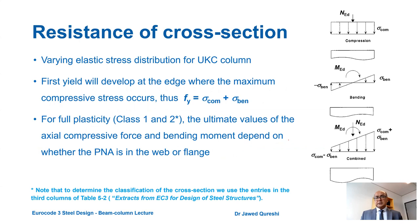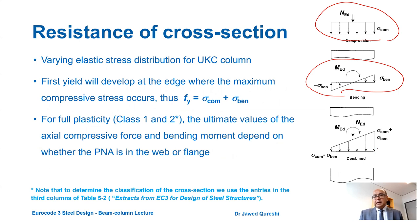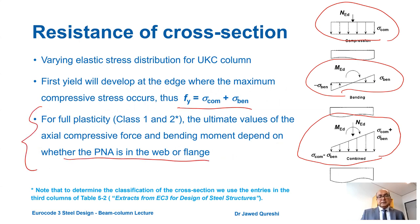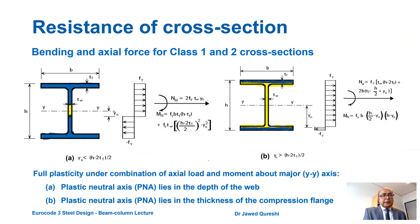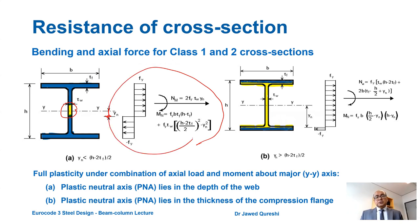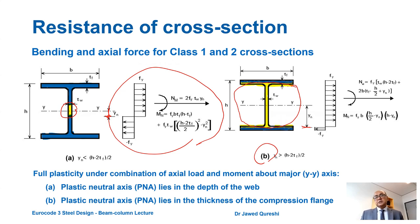How do we work out resistance of the section? When a section is subjected to compressive stresses and bending simultaneously, it will have a combination of compressive and bending stresses. The resistance depends on whether the plastic neutral axis is in the web or in the flange. In Part A, where the plastic neutral axis is in the web, only the yellow portion is under compression and the blue portion is in bending — use the corresponding formula for reduced moment capacity. In Part B, if the plastic neutral axis is within the flange, the yellow portion carries compression and the blue portion carries bending, meaning high compression but less bending.